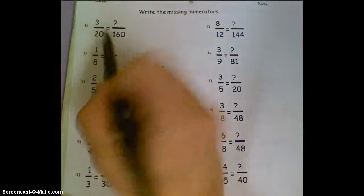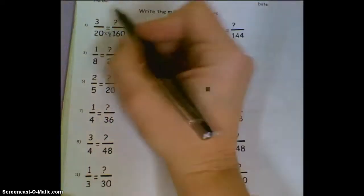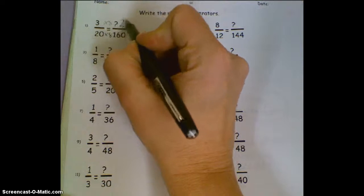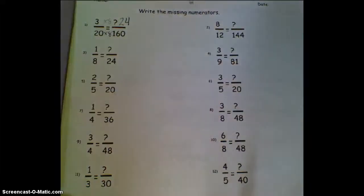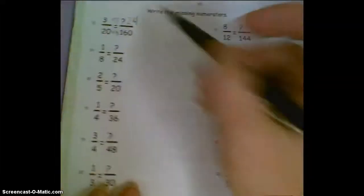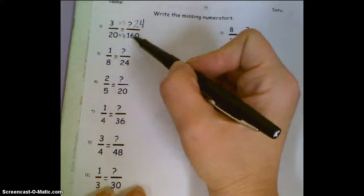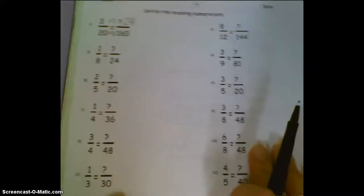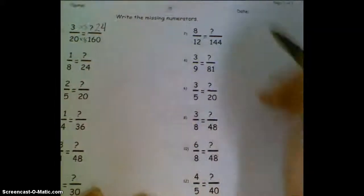20 times 8 equals 160, so 3 times 8 will equal 24, so our missing number up here is 24. The other way you could do it is to multiply up. 160 times 3 and then 20 times 24. Those are some big numbers to work with, but also another possibility.